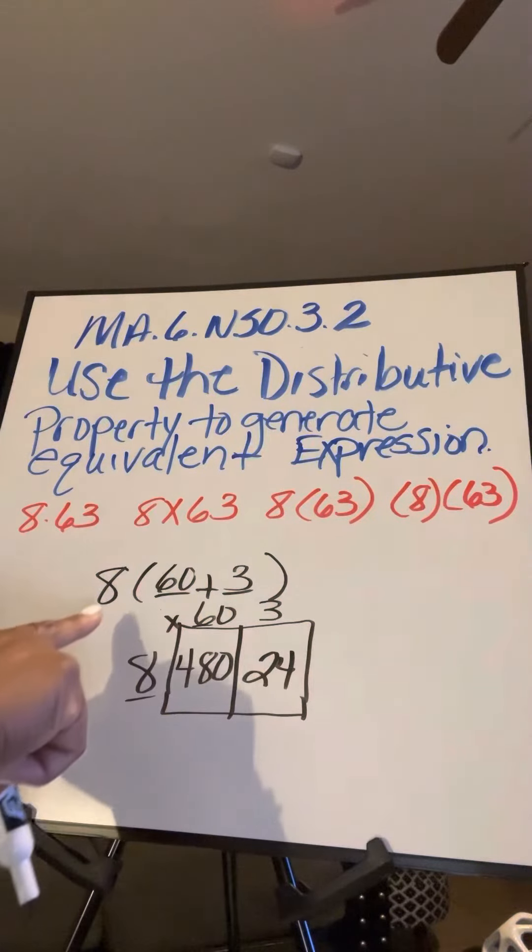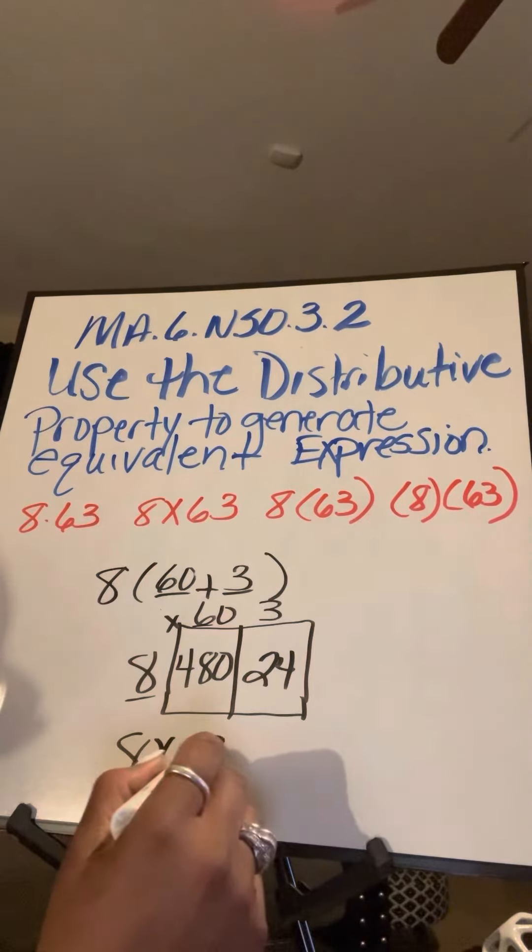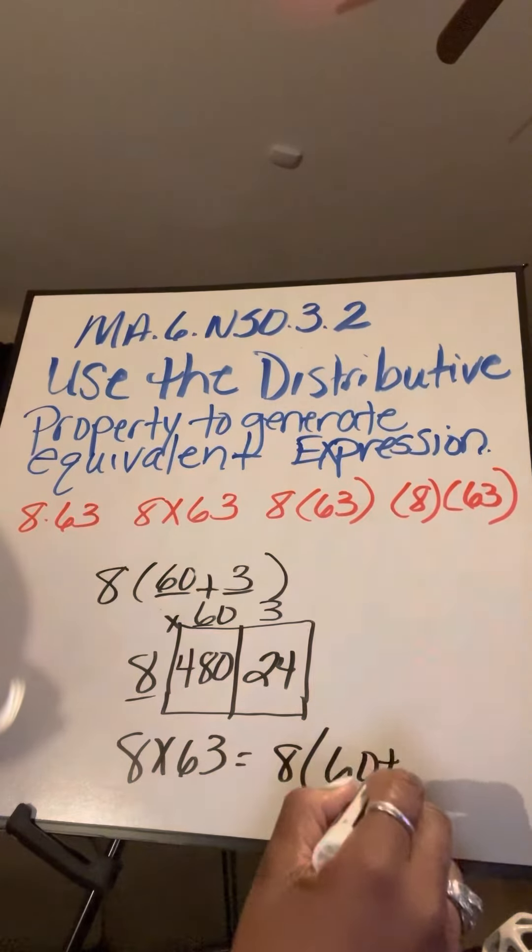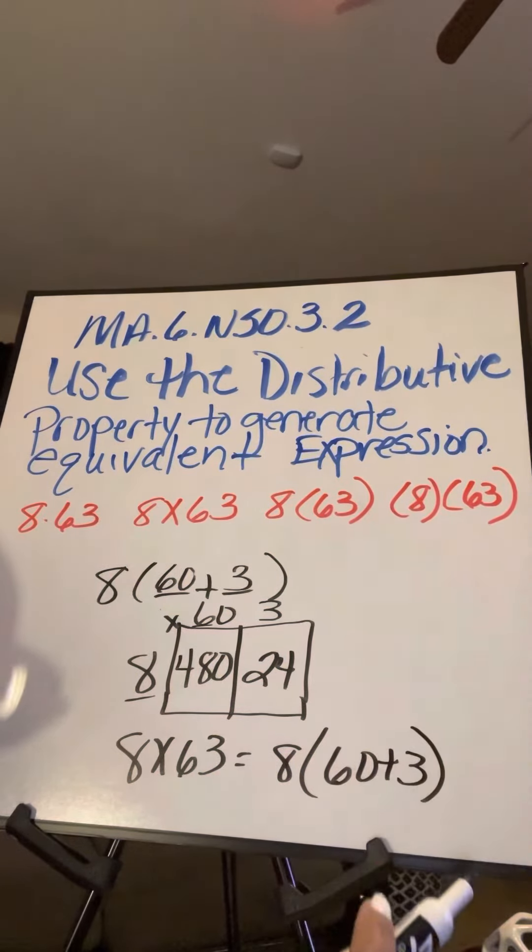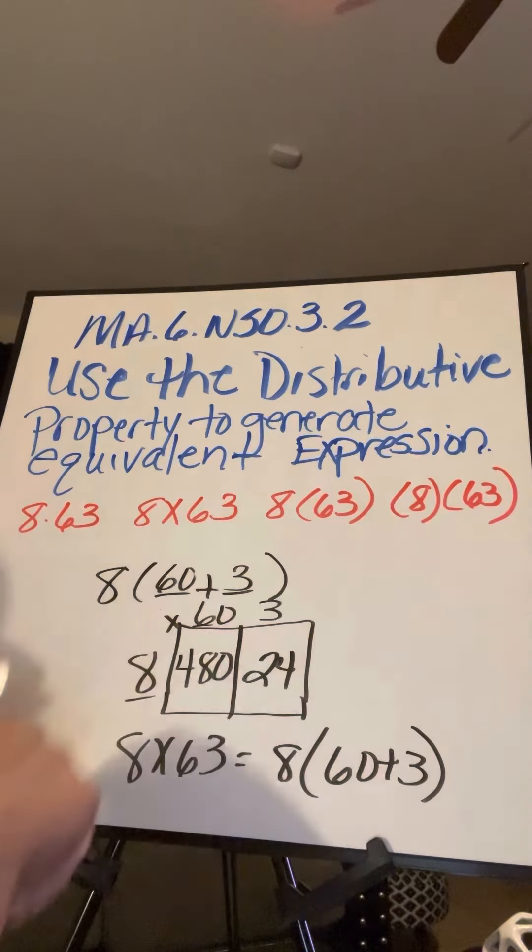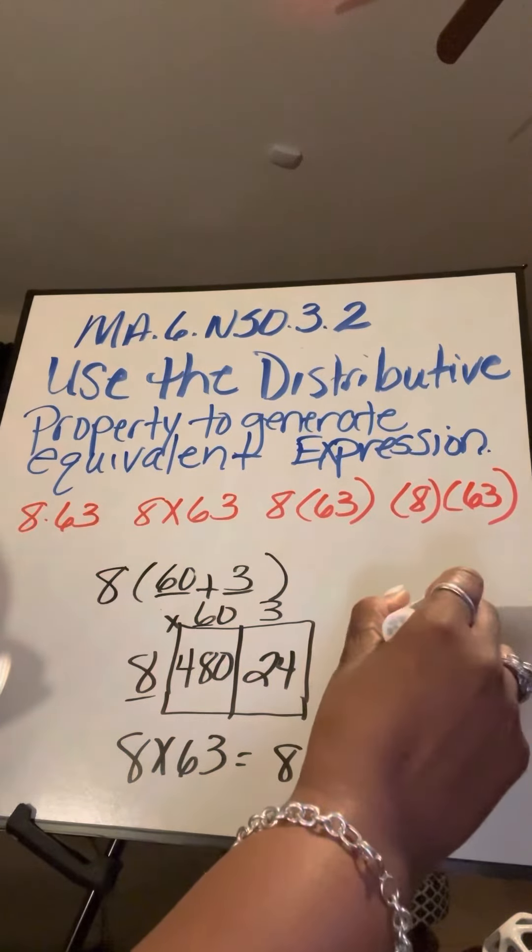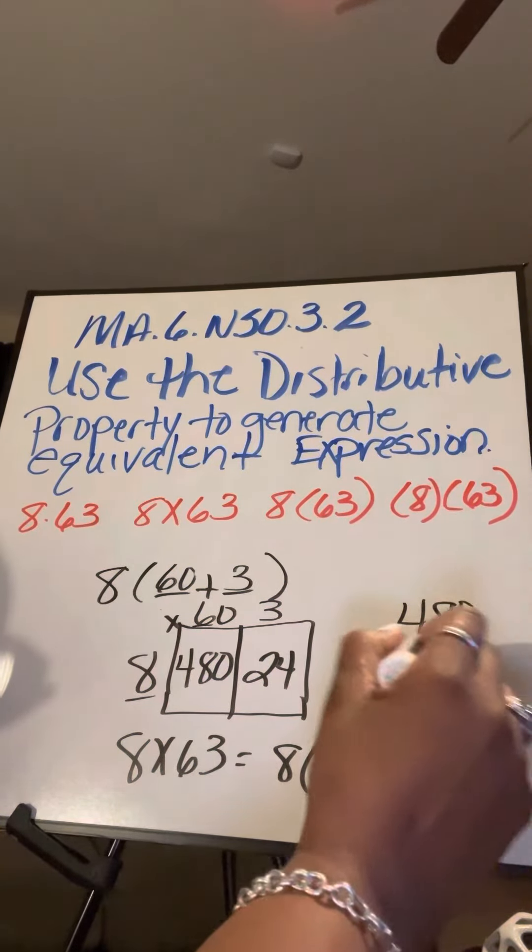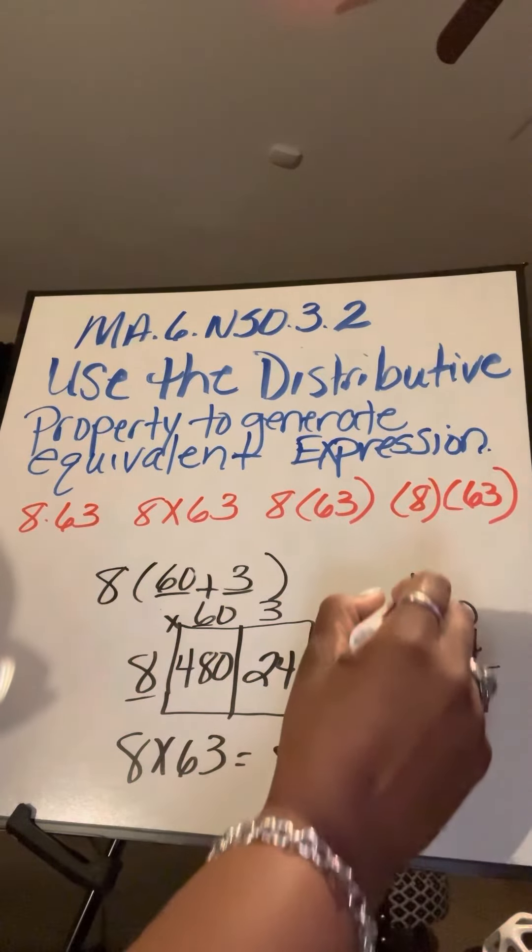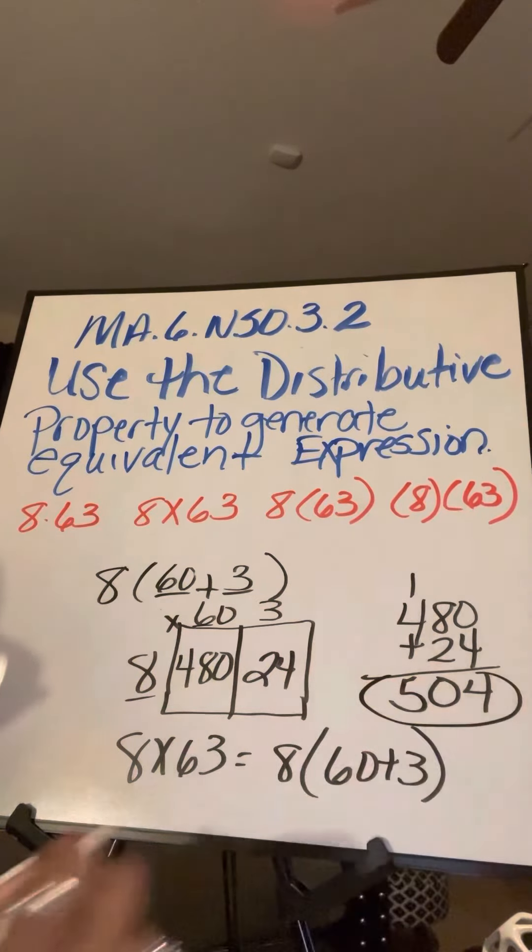The equivalent expression is eight times 63 is equivalent to eight times 60 plus three. And if I wanted to solve it, if it asks for the sum or the product—I'm sorry, not the sum, the product—I'm going to just add 480 plus 24, which gives me 410. I keep the zero, regroup the one, and that is five. So my answer to that problem would be 504.